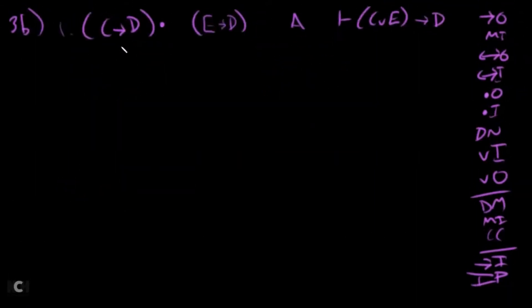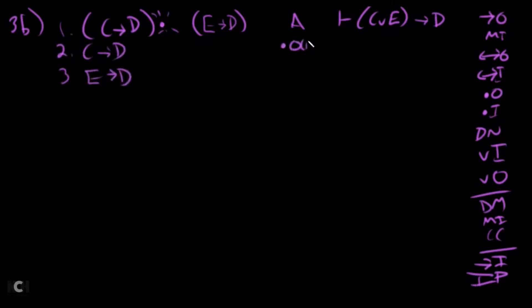Three B: we've got (C arrow D) dot (E arrow D) as our one and only assumption. We're trying to get (C wedge E) arrow D. Going down the list — arrow outs, no arrows not in front of the main connective. No double arrows. There is a dot not in parentheses, so let's break that down. That gets us two things: C arrow D and E arrow D. And out on line one for both.